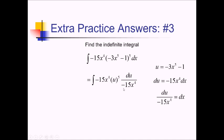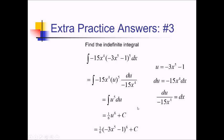The coefficients canceling was a bonus, but the x to the fourths had to cancel. We end up with just u to the fifth du. Using the reverse power rule, the exponent bumps up to 6, and dividing by that gives 1 over 6 times u to the sixth power plus c. Substituting back, this is 1 over 6 times the quantity negative 3x to the fifth minus 1 raised to the sixth power, plus c.